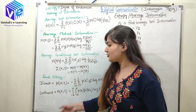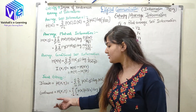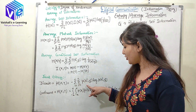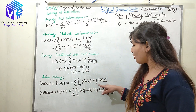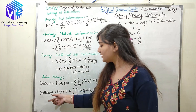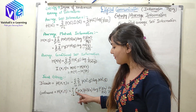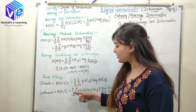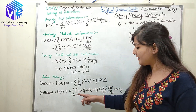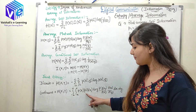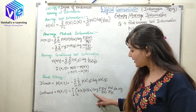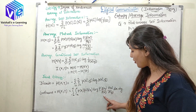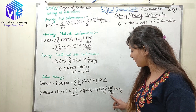Joint entropy can be discrete or continuous. In the discrete case it is represented by the summation of joint probability times log of joint probability. In the continuous case, summation is replaced by integration: the integral of p(x)·p(y|x)·log[p(y|x)/p(y)] dx dy.